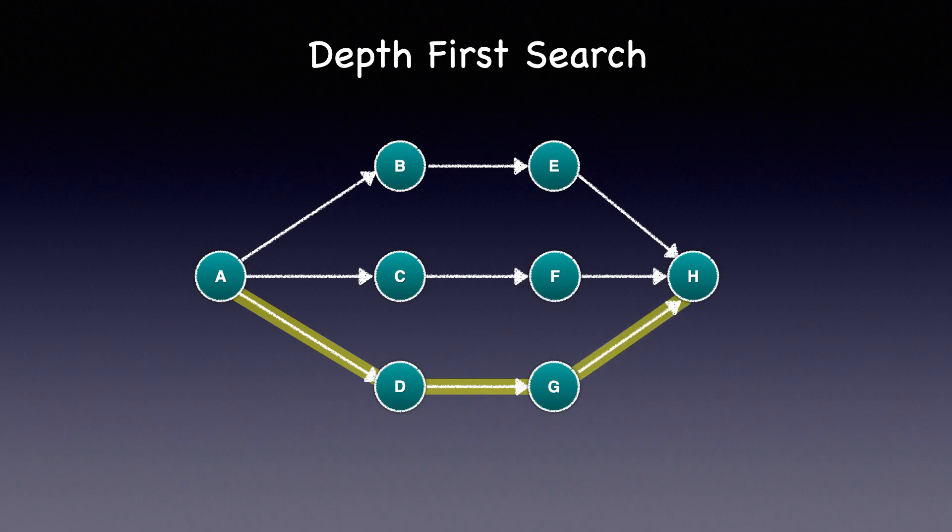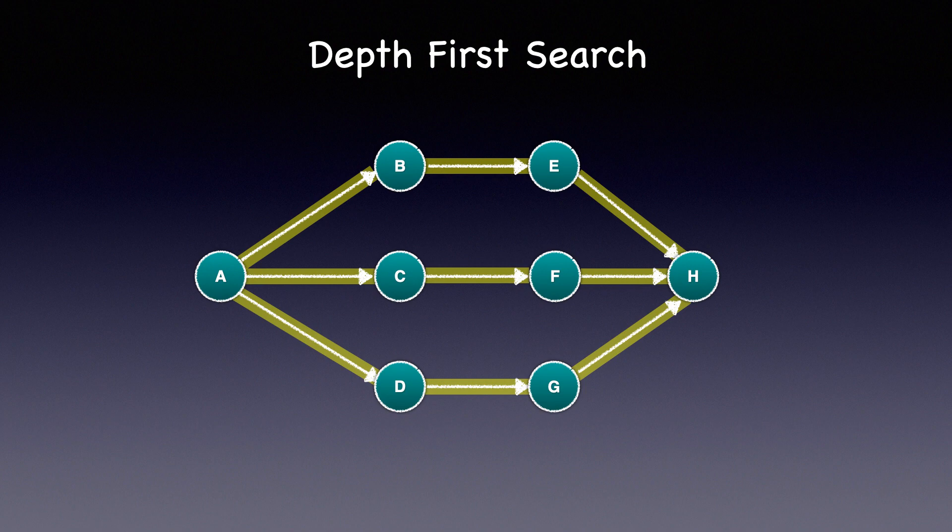The algorithm then backtracks to the source node A, selects one of its neighbors that has yet to be discovered or explored and then traverses to that node. It processes that node and goes down to its neighboring node till it reaches the end. It backtracks once again and traverses to the last neighboring node B and navigates till it reaches the last node H. You can see that all the nodes have been explored so that's a higher level view of how we can traverse a graph using depth first search.